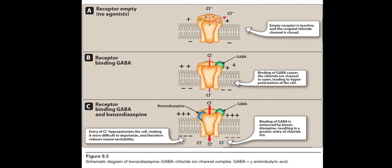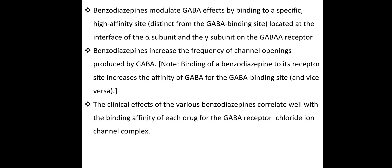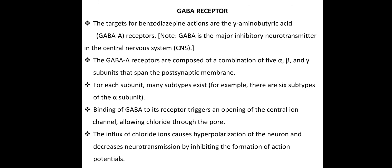What does this neurotransmitter do in our body? It has an inhibitory effect — specifically neuronal hyperpolarization. This means it inhibits neuronal activity, which can cause effects like muscle contraction inhibition.